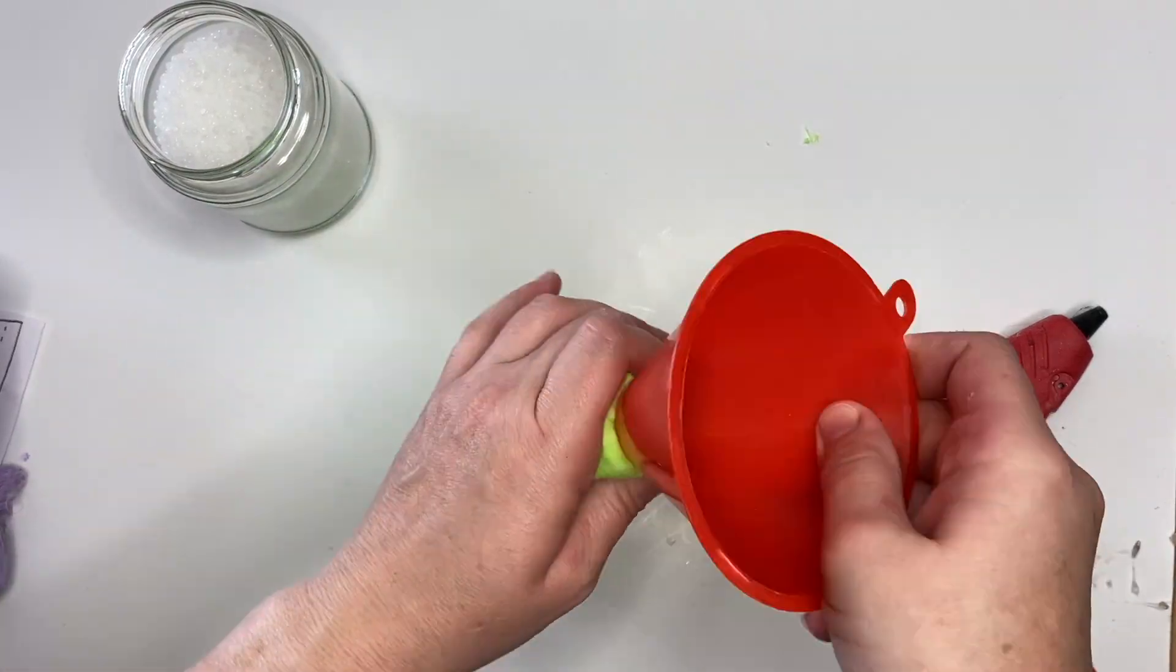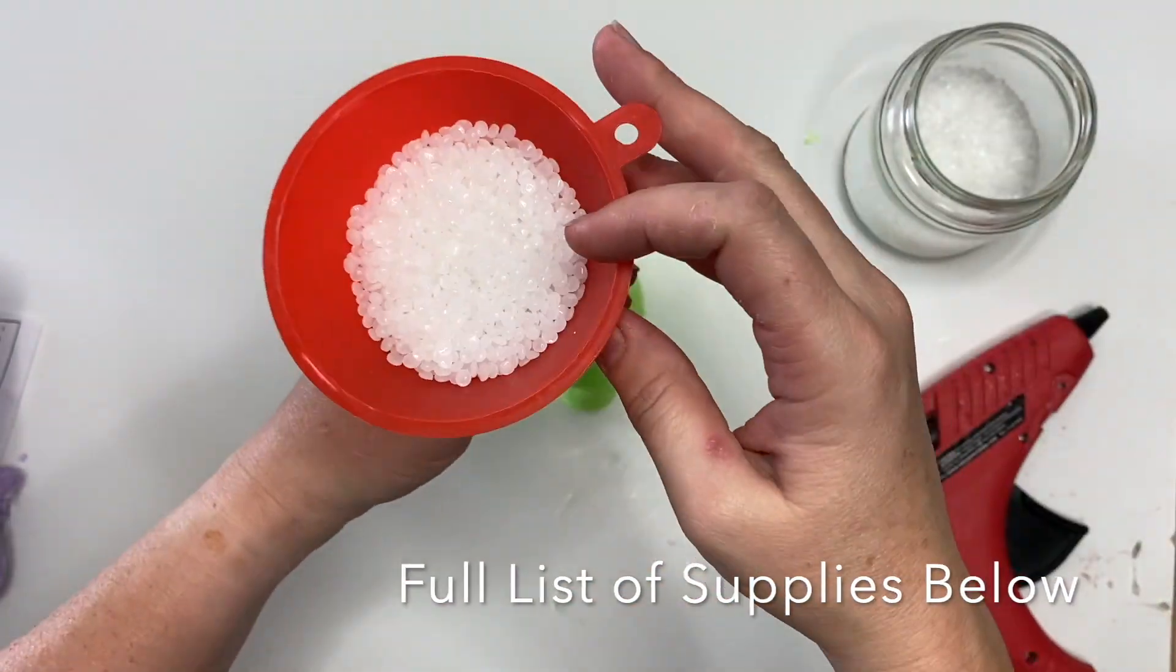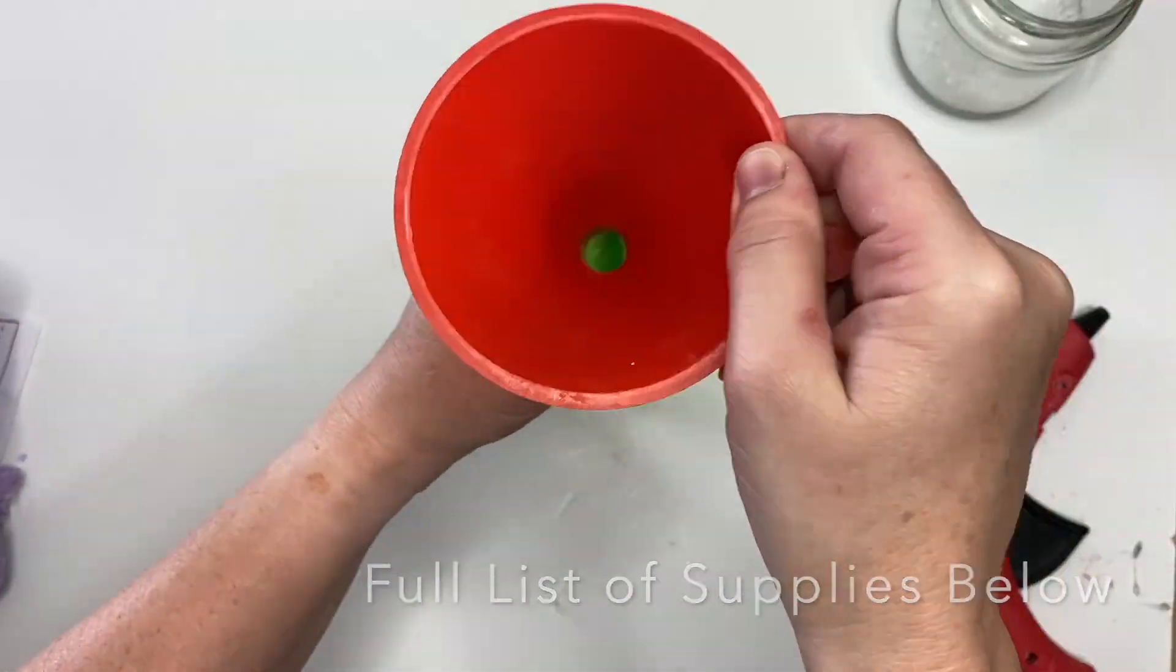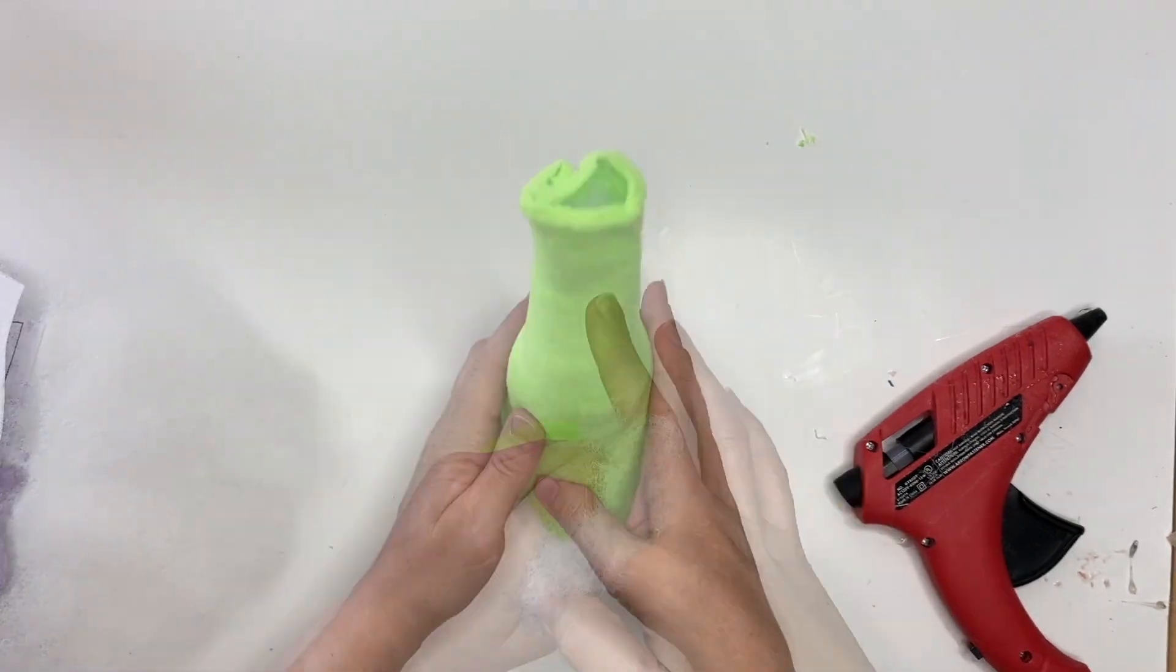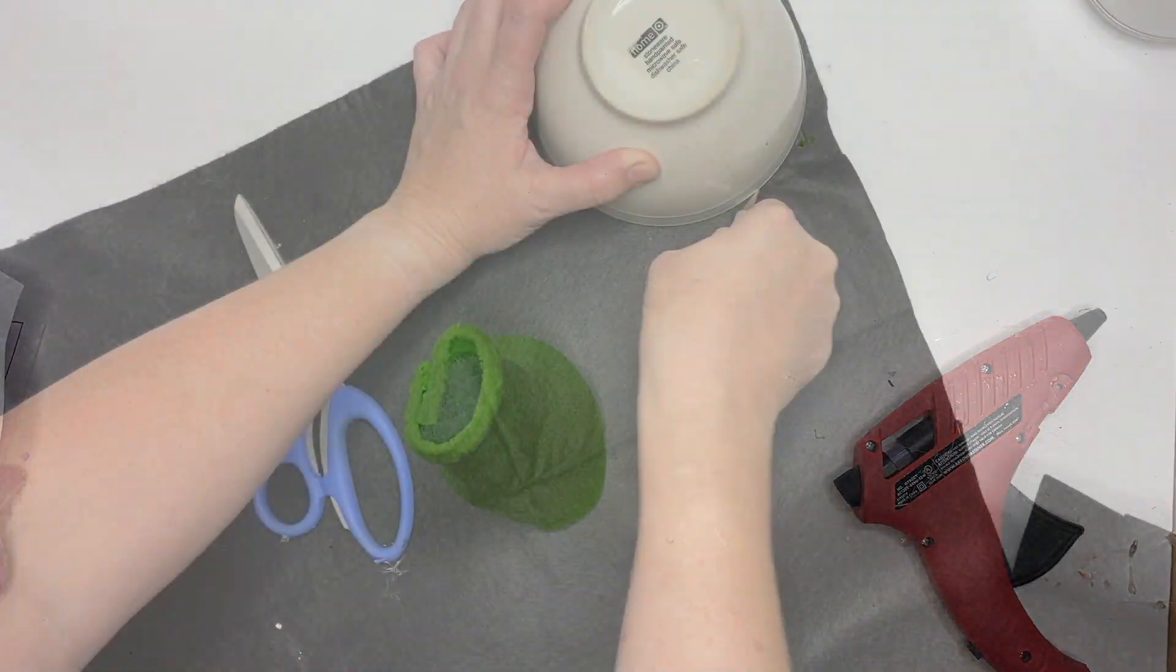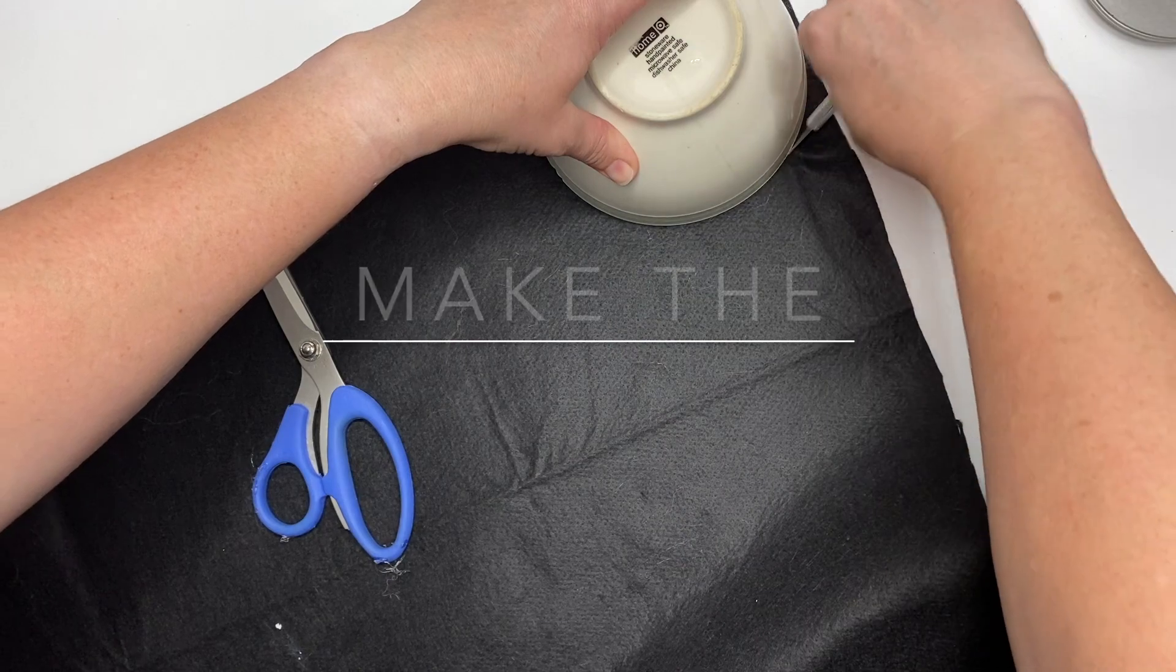Once it's dry we are going to flip it over and fill it. I'm using poly beads, and of course I have to spill some. We're also going to stuff the top all the way up to that tippy top with polyfill, and then you're gonna roll it in your hands, distribute it.